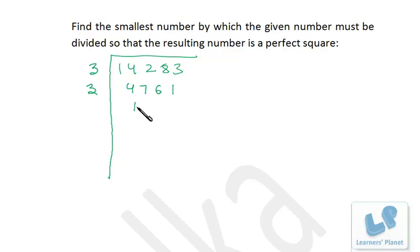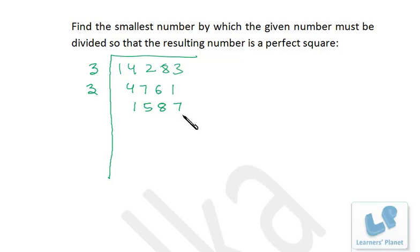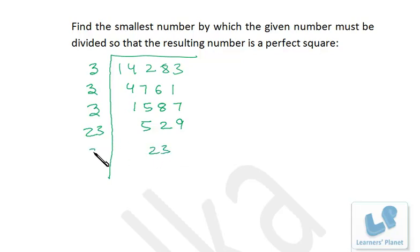Continuing the prime factorization: dividing repeatedly by 3, then checking further. After completing the factorization and making pairs, we are left with one 3 only.